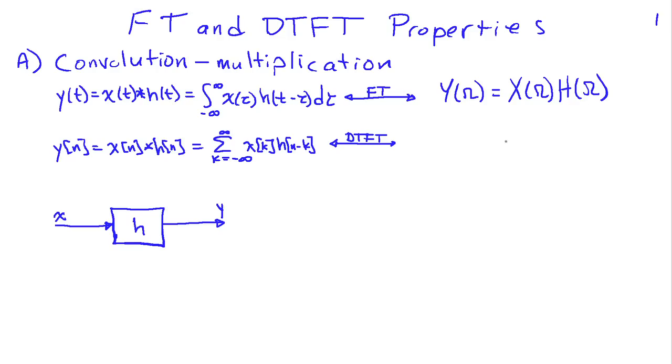The same property holds in the discrete-time case. If I have an input x[n] to a linear system with an impulse response h[n], the output y[n], then the discrete-time Fourier Transform of the output, Y(e^jω), becomes equal to X(e^jω) times H(e^jω).